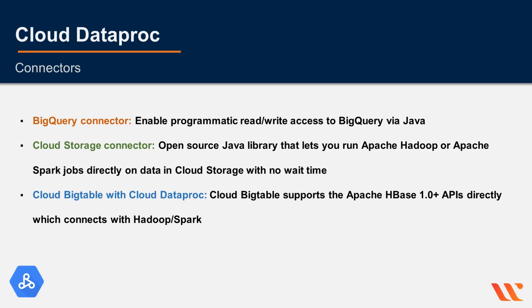There are three main connectors. The BigQuery connector lets you use programmatic read-write access to BigQuery as a Java library, which is a good way to process data stored in BigQuery without exposing command line access. The Cloud Storage connector is an open source Java library that lets you run Apache Hadoop or Spark jobs directly on data in Cloud Storage, and offers a number of benefits over choosing the Hadoop Distributed File System.